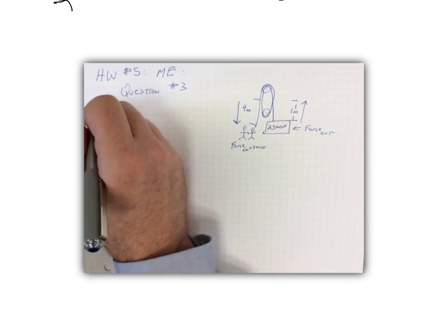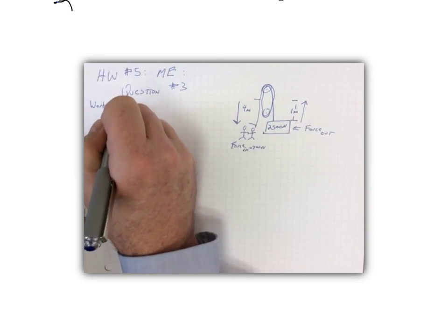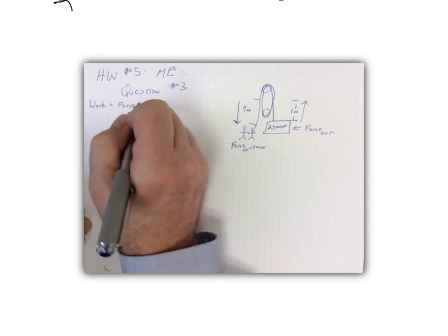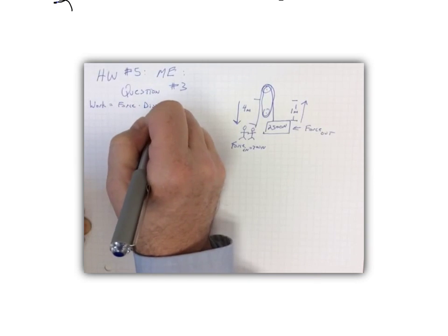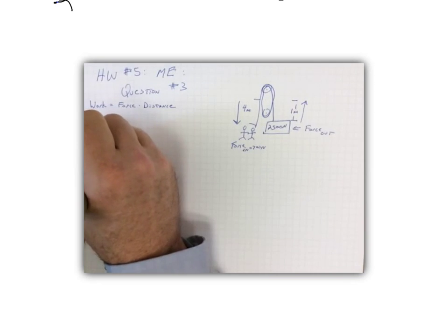Okay, so what formulas do we need? Well, we need to calculate first of all the work done on each end of the system. So remember that work equals force times distance. Keep in mind the distance always has to be in meters.